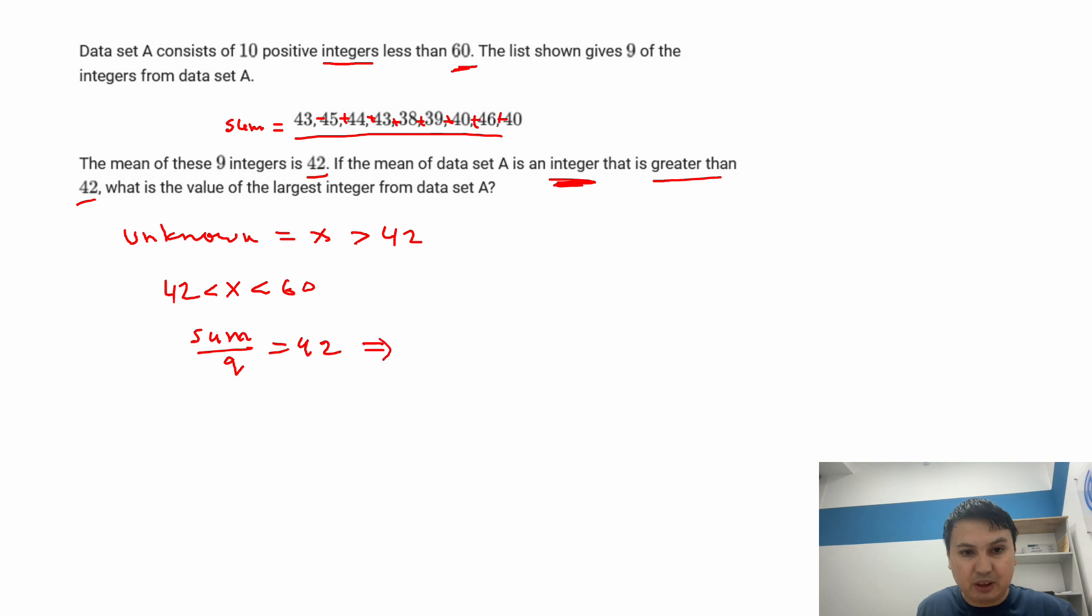Well, this means the sum of the 9 terms is 42 times 9, which is 378.